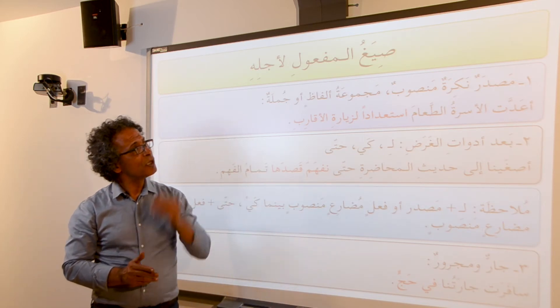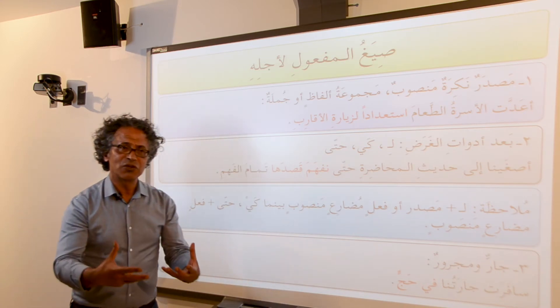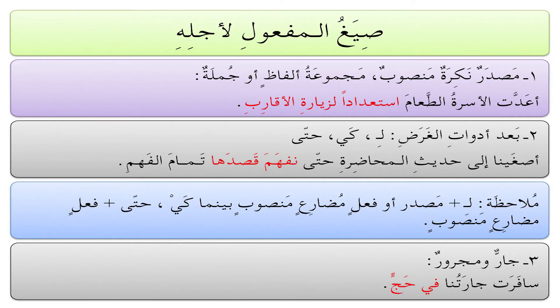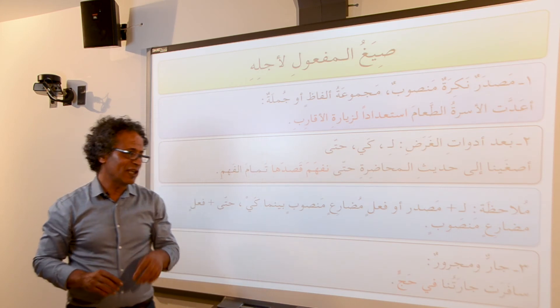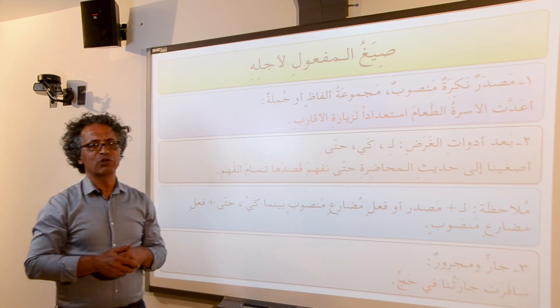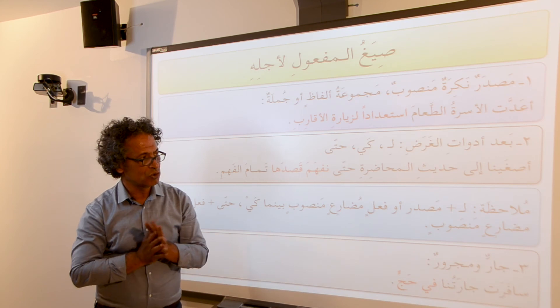Now the third form is جار ومجرور — a prepositional phrase can play the role of المفعول لأجله. For example: سافرت جارتنا في حج — our neighbor traveled to do pilgrimage, in order to do pilgrimage. So في حج here indicates the purpose of her trip.